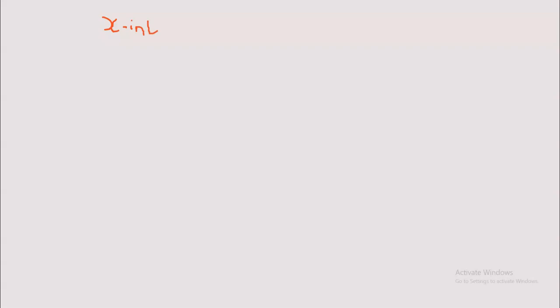The last thing I want to do with parabola is the intercepts — so we have the x-intercept and also the y-intercept as our two parabola intercepts. Remember: x-intercept is the point where the graph cuts at x. Wherever your graph cuts at x, we call that the x-intercept. Wherever the graph cuts at y, we call that the y-intercept. At x-intercept the value of y is 0, and at y-intercept the value of x must be 0.